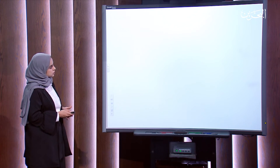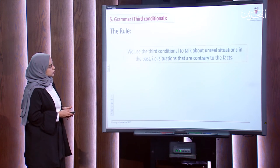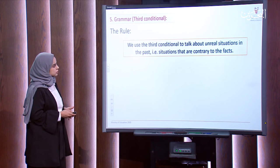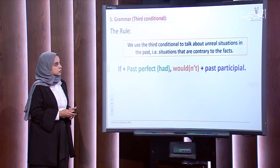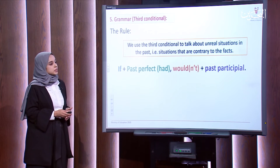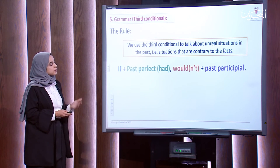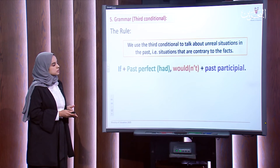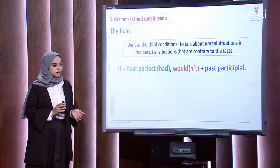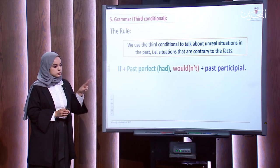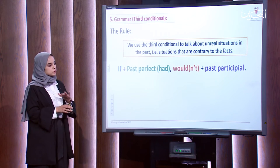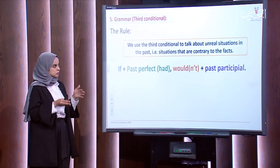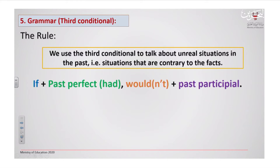Now, let us see the rule. What is the rule of the third conditional? We use the third conditional to talk about unreal situations in the past — situations that are contrary to the facts. Two actions or two situations in the past that are not real, not related to our reality.